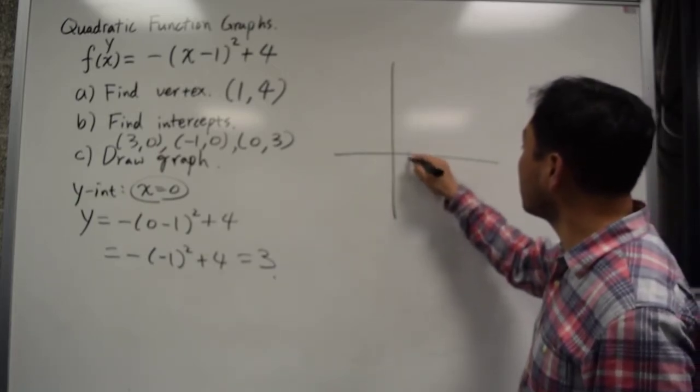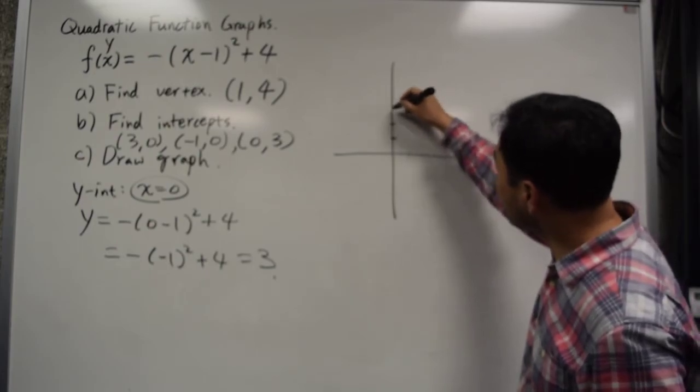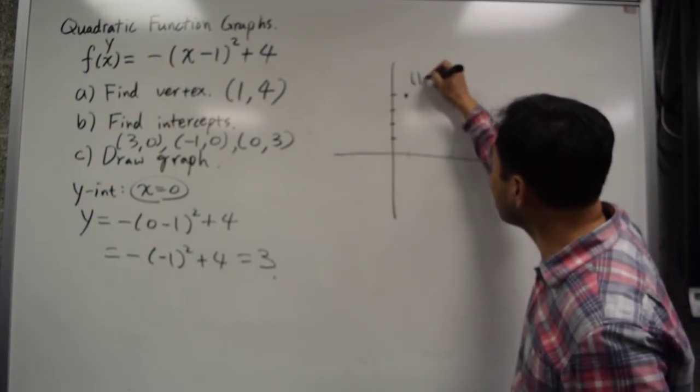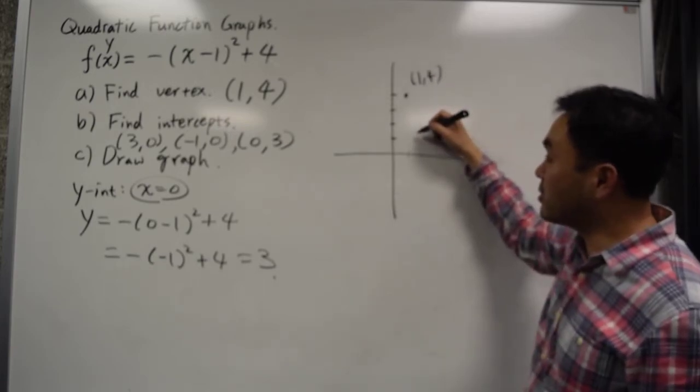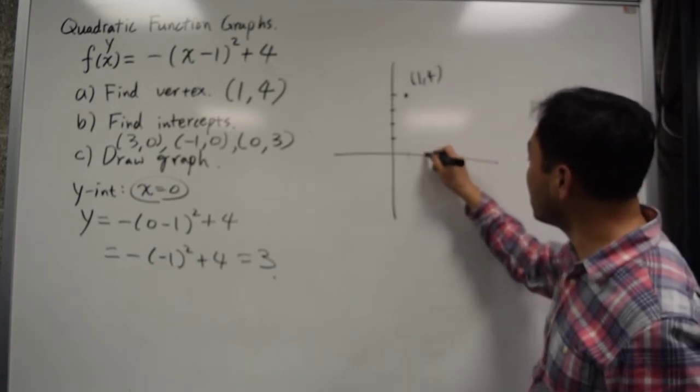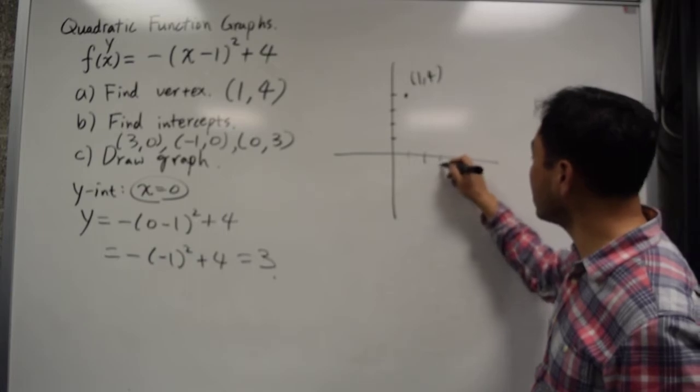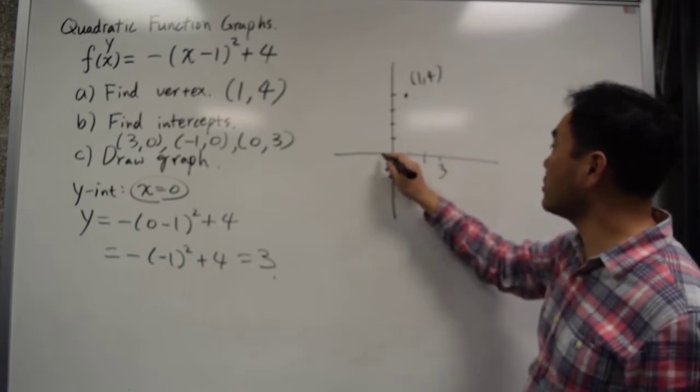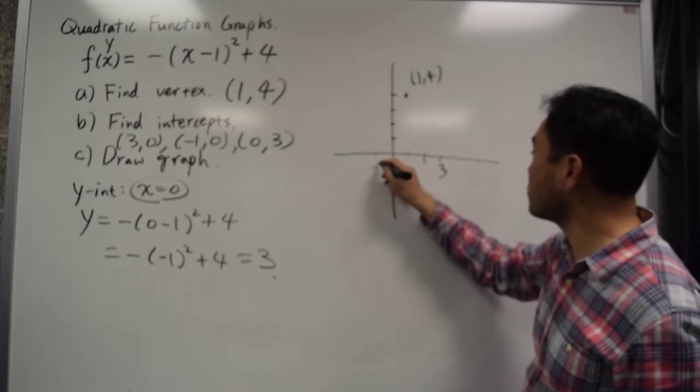So you have 1, 2, 3, 4. Here's 1, 4. And then 3, 0, 1, 2, 3. And then negative 1, 0, so that's negative 1.